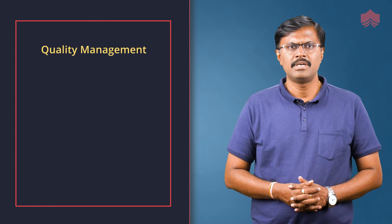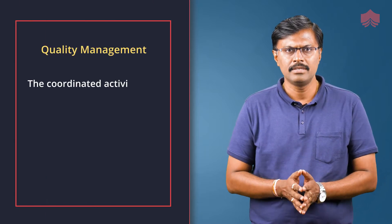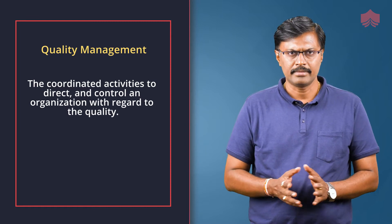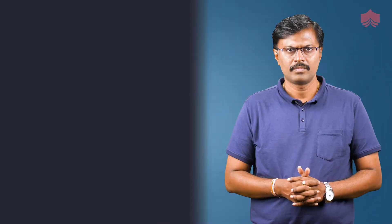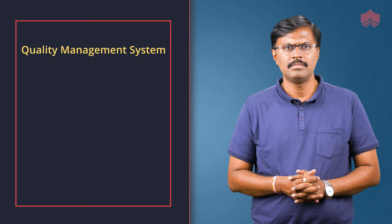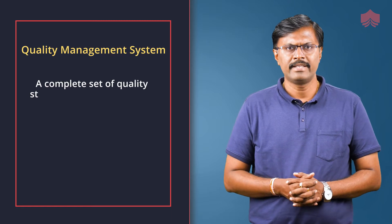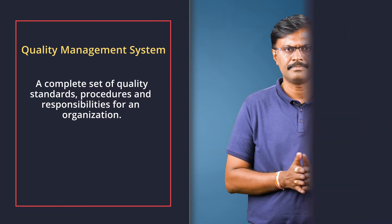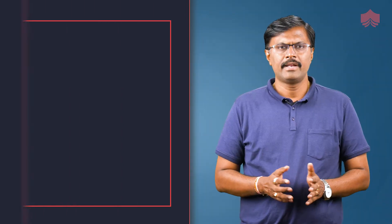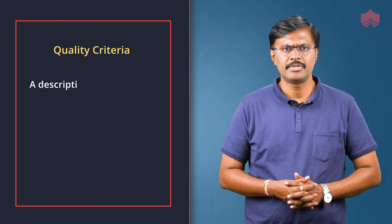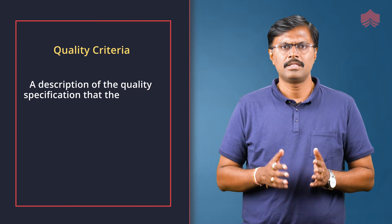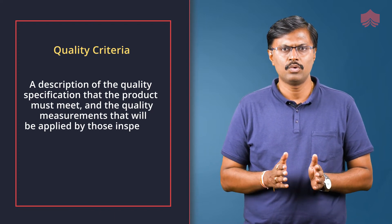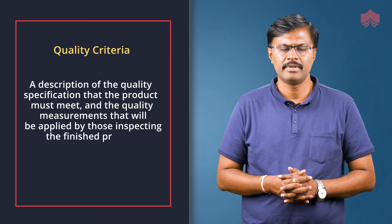Quality management refers to the coordinated activities to direct and control an organization with regard to quality. The quality management system comprises a set of quality standards, procedures, and responsibilities for an organization. Quality criteria refers to the description of the quality specifications that the product must meet and the quality measurements that will be applied by those inspecting the finished products.